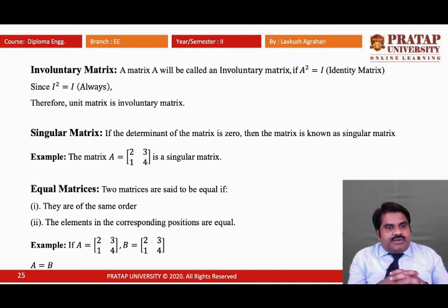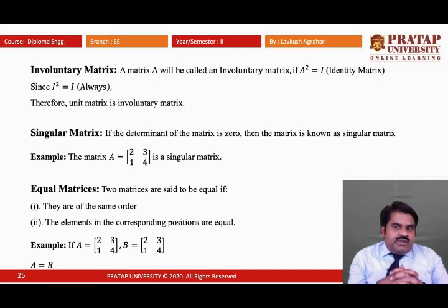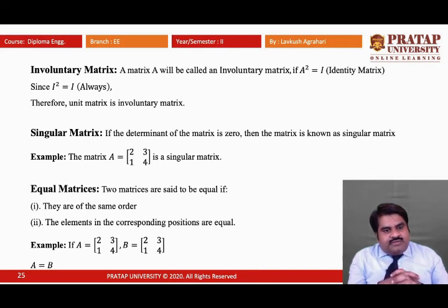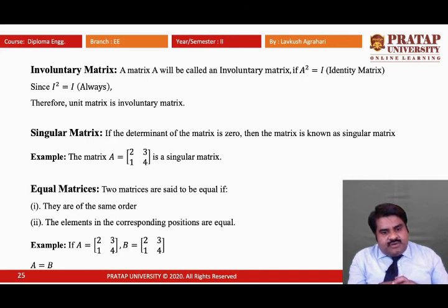Involutory matrix: a matrix A is called involutory if A² = I, the identity matrix. Since I² = I always, the unit matrix is always an involutory matrix. Also, if the determinant of a matrix is zero, the matrix is known as a singular matrix.